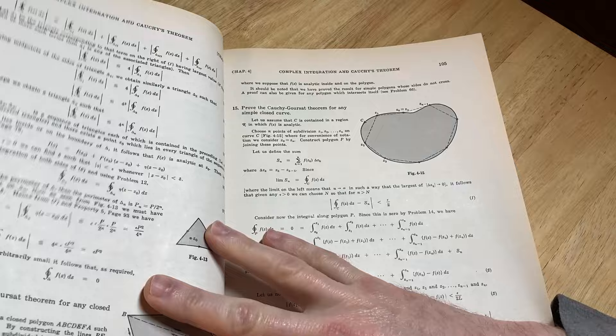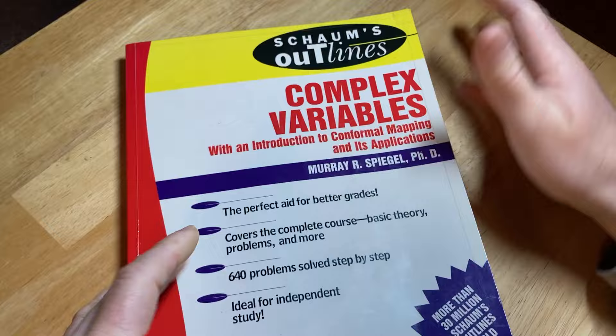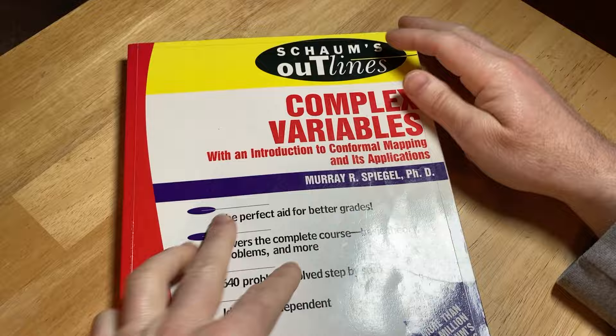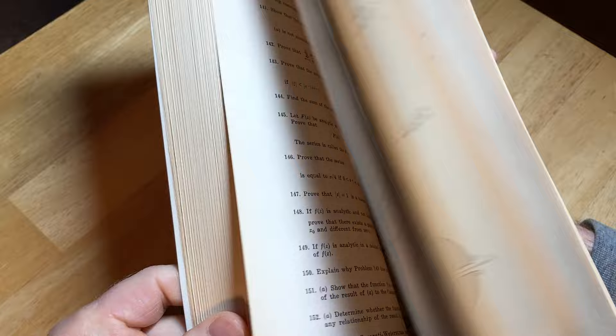Just to make you aware of this book, it's an excellent book. I think it's probably the best Schaum's Outline out there. It has everything you need if you're studying complex variables. Obviously, if you're not studying complex variables, it's not that helpful. But you can use it for self-study.